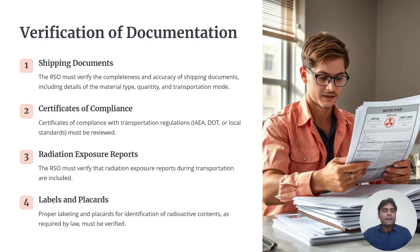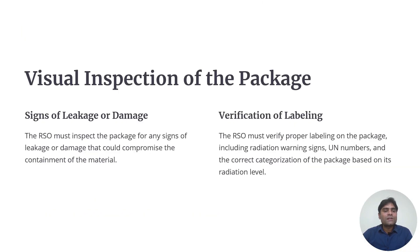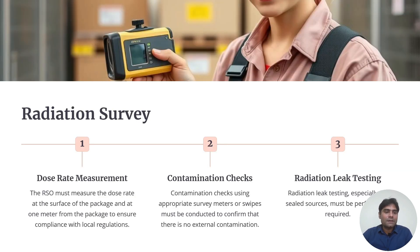Their responsibilities upon receiving a shipment are critical for regulatory compliance and safety of personnel and the environment. Duties include: verification of documents such as shipping documents and certificates of compliance; confirming there is no contamination on the surface; checking that labels and placards are intact; performing visual inspection for signs of leakage or damage; and conducting a radiation survey including dose rate measurement, contamination check, and radiation leak testing.